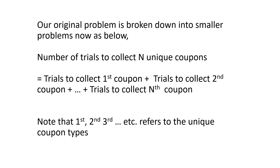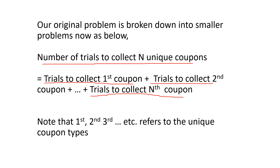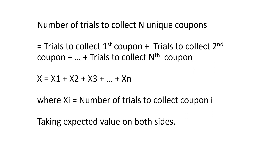So now our original problem is broken down into sub-problems. The number of trials needed to collect n unique coupons is equal to the number of trials to collect the first unique coupon plus the number of trials to collect the second coupon, and so on till we collect the nth coupon — where first, second, third refers to unique coupon types. In terms of our random variables: X equals X1 plus X2 plus ... plus Xn.